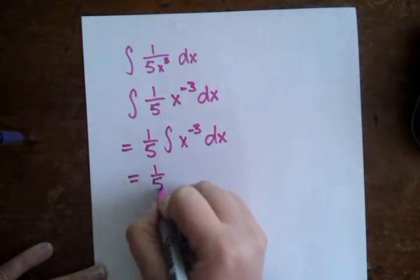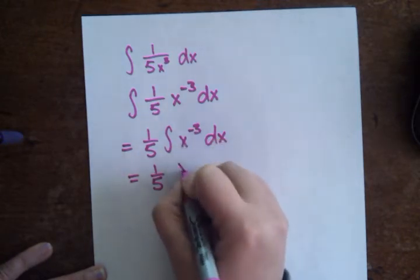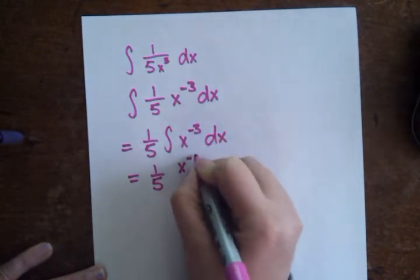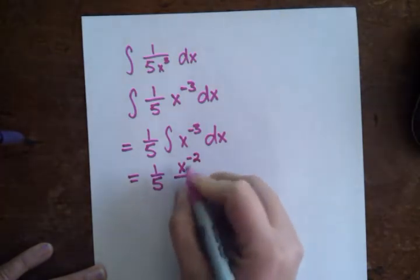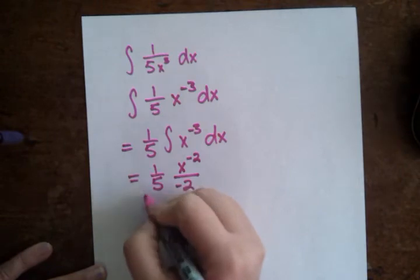So that gives me 1/5. And my rule for finding the integral of x to a power is that I add 1 to the power. So that's going to give me x to the negative 2 over negative 2.